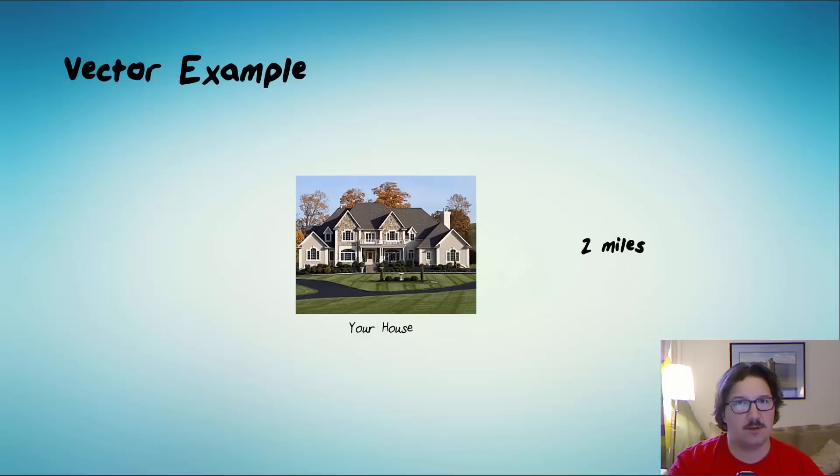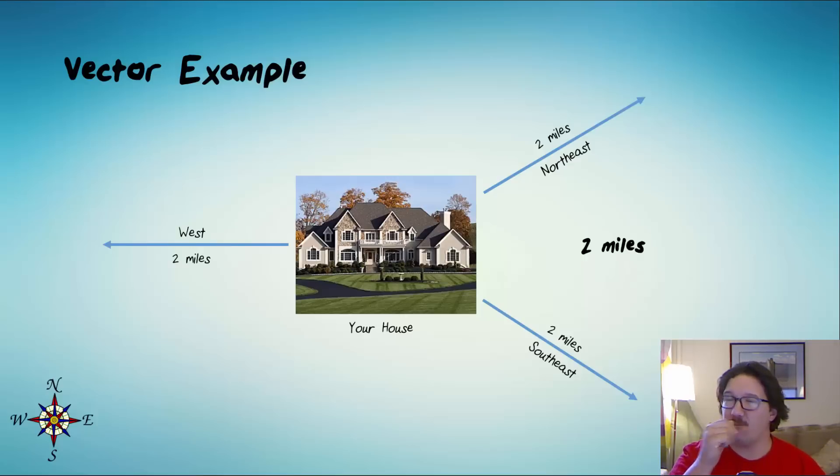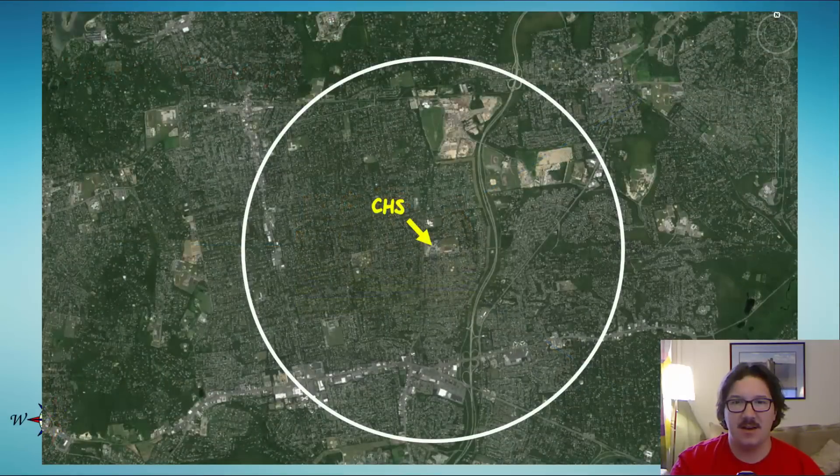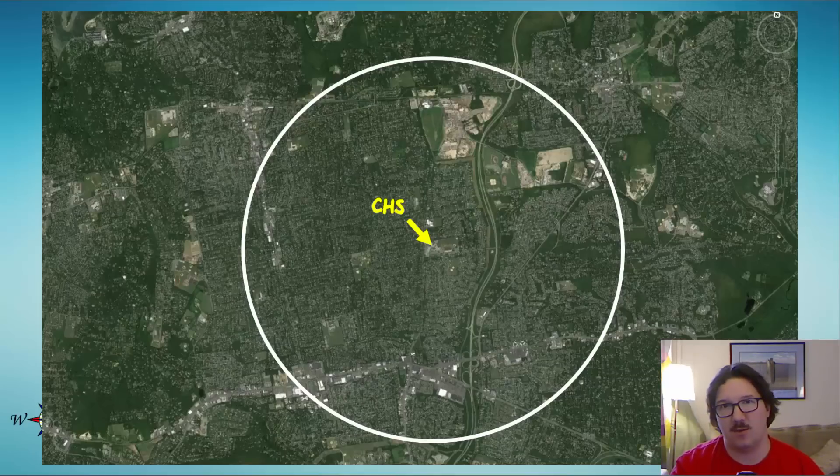But, you know, the school could be two miles northeast of your house or two miles southeast of your house or two miles west of your house. And so I don't really know where the school is. I don't have enough information. In fact, the school is in the center of this picture. And every place on that white circle is two miles away. So it's really not that specific to say two miles away.